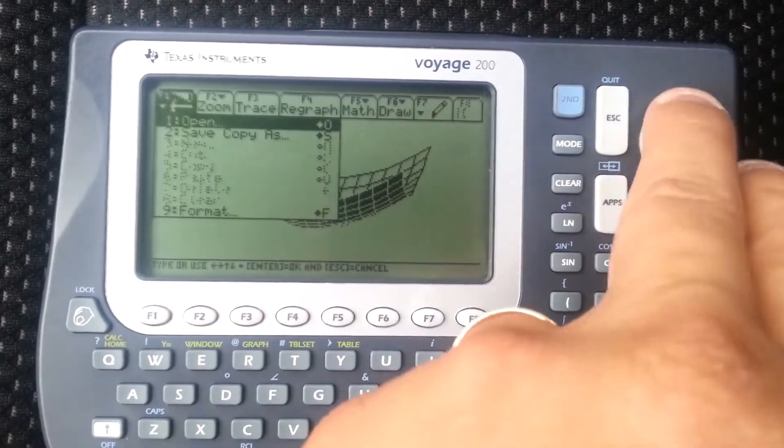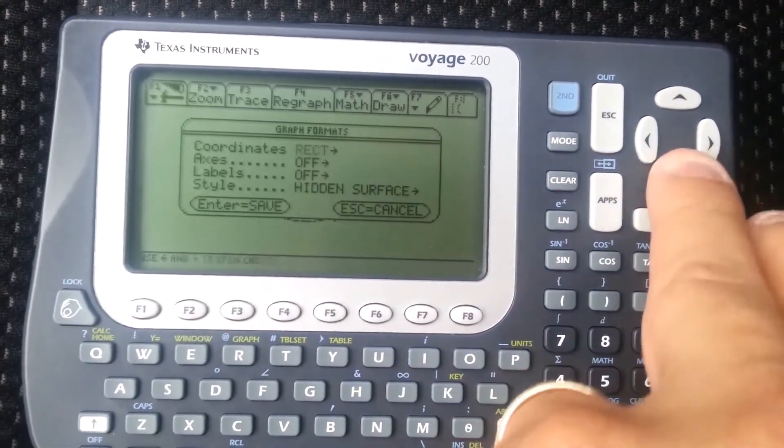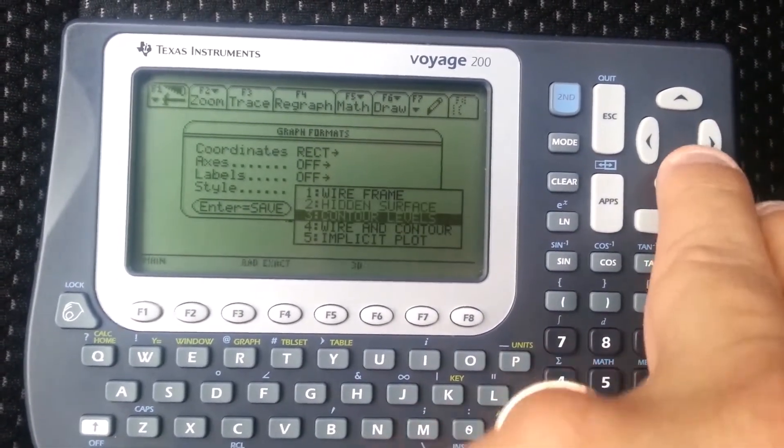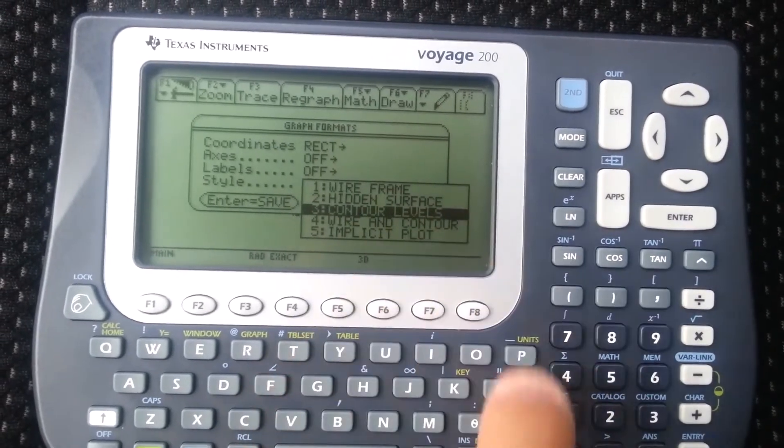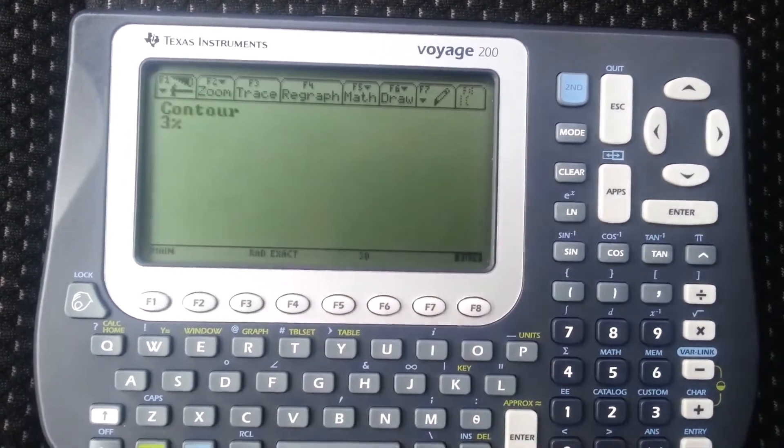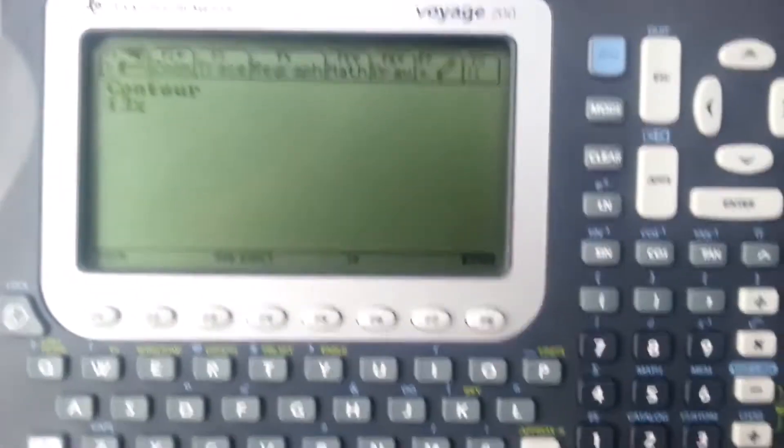Let me try the contour plot and just see what it looks like. I actually haven't done that one in a while. You can do wire and contour and something called an implicit plot. Let's see what this one gives us.